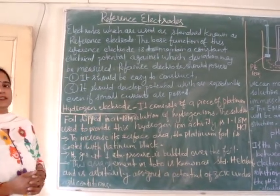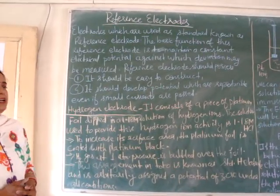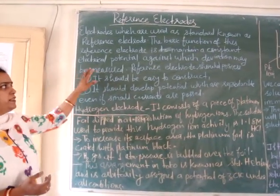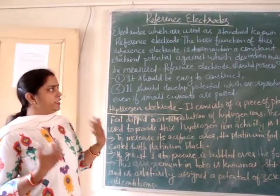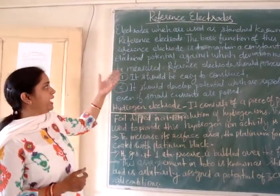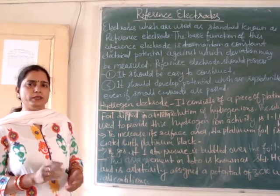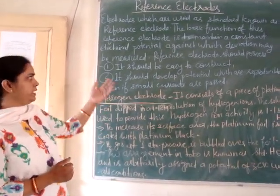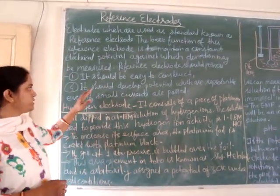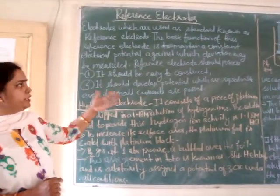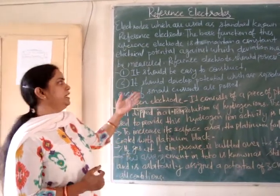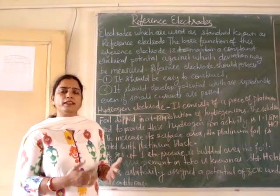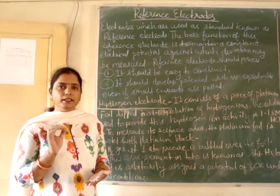Electrodes which are used as a standard are known as reference electrodes, and the basic function of this reference electrode is to maintain a constant electrical potential against which any deviation can be measured. A reference electrode should possess mainly two characteristics: first, it should be easy to construct, and second, it should develop potentials which are reproducible even if small currents are passed.